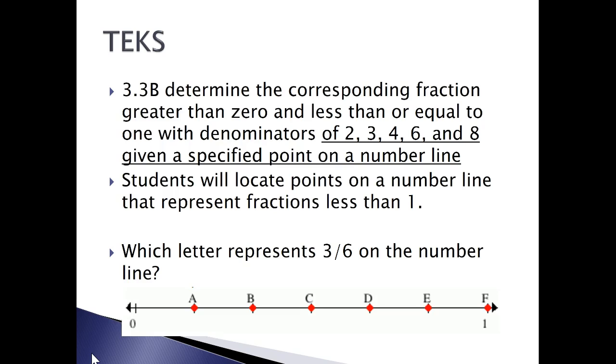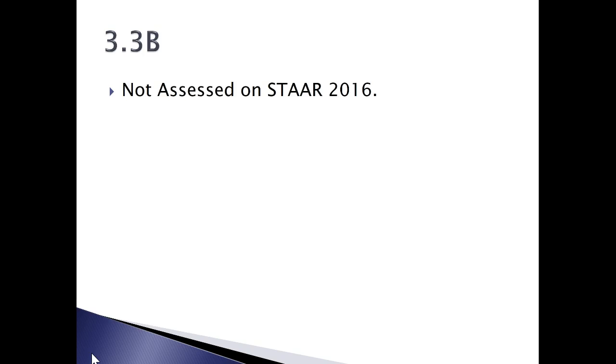3.3B says to determine the corresponding fraction greater than zero and less than or equal to one with denominators of two, three, four, six, and eight given a specified point on a number line. Here the kids will locate points on the number line that represent fractions less than one. Notice here that we don't start with the zero being colored in red. We start with the A. So we're looking at which letter represents three-sixths on the number line. Well, if we know that three-sixths is equivalent to one-half, we can find one-half of this number line. Or we can count the spaces in between the letters and see that there are three for the numerator which would land on C. 3.3B was not assessed on STAR.